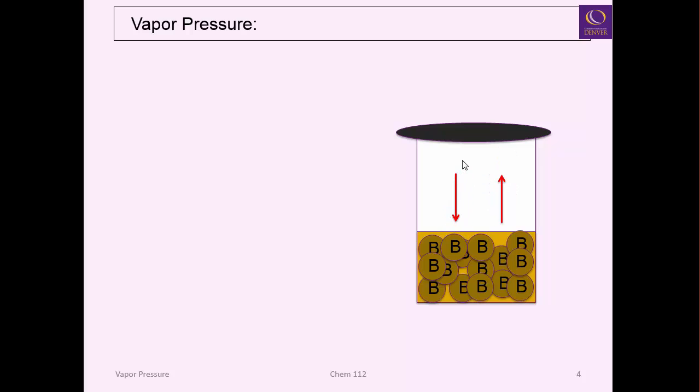Any material that you put in a closed container at some point will come into equilibrium where the amount of molecules that are escaping and becoming vapor is in equilibrium with the moles of material that are in the vapor state becoming back to liquid. So the rate of evaporation equals the rate of condensing when you establish equilibrium vapor pressure, and you measure this at some temperature.